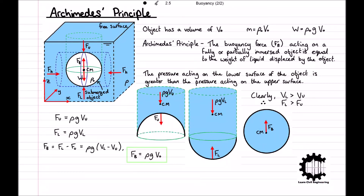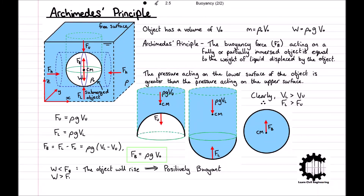The same result also applies for an object in a density stratified liquid, just with the corresponding density distribution. We should also note that if the weight of the object is less than the buoyancy force, the object will rise towards the liquid's free surface and can be called positively buoyant. The opposite applies if the weight of the object is greater than the buoyancy force, in that the object will sink and can be called negatively buoyant.